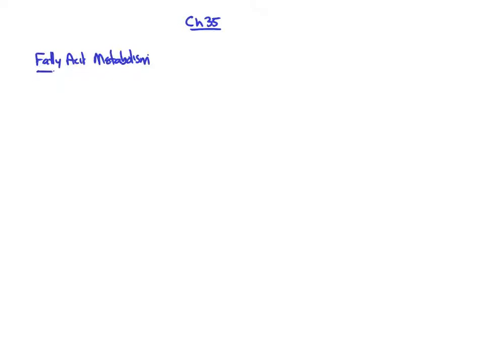What we're going to look at in Chapter 35A is fatty acid metabolism. So does everyone remember what a fatty acid looks like? They're just giant carboxylic acids.